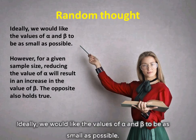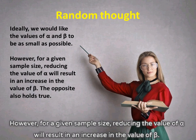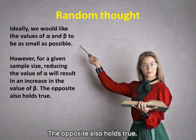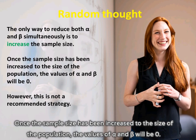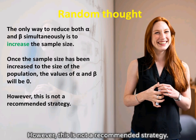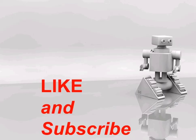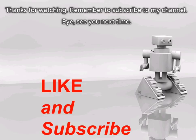Ideally, we would like the values of alpha and beta to be as small as possible. However, for a given sample size, reducing the value of alpha will result in an increase in the value of beta — the opposite also holds true. The only way to reduce both alpha and beta simultaneously is to increase the sample size. Once the sample size has been increased to the size of the population, the values of alpha and beta will be zero; however, this is not a recommended strategy. Thanks for watching. Remember to subscribe to my channel. Bye, see you next time.